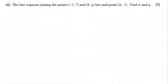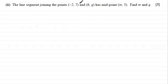Hi there. Now in this question we're given that the line segment joining the points (-2, 7) and (6, q) has a midpoint of (m, 5) and we've got to find the values of m and q for three marks.